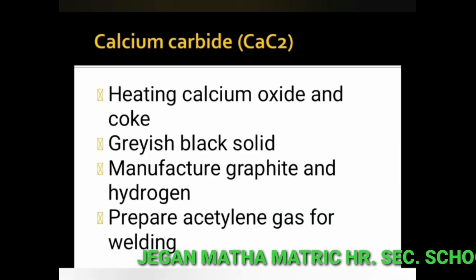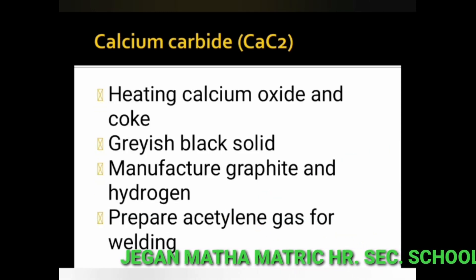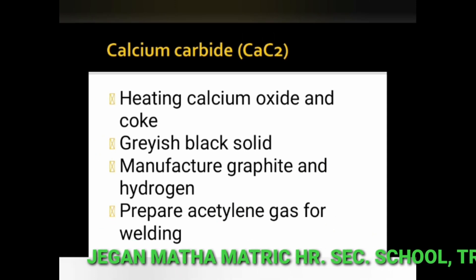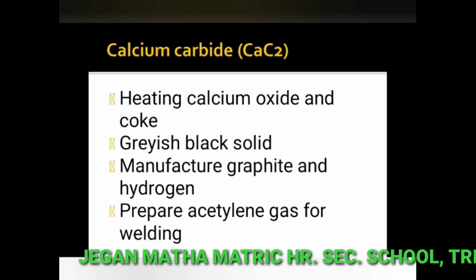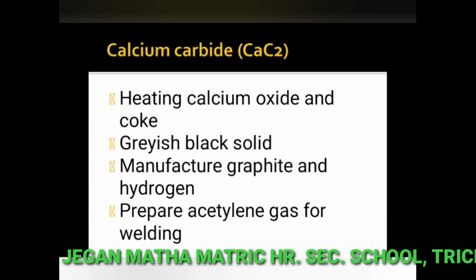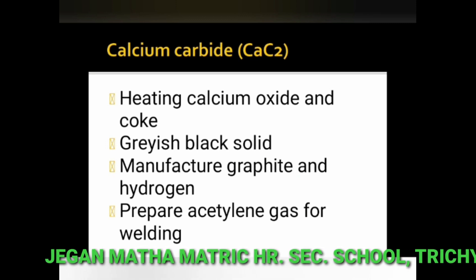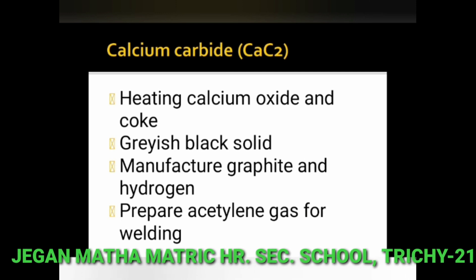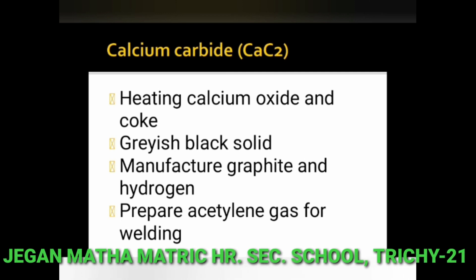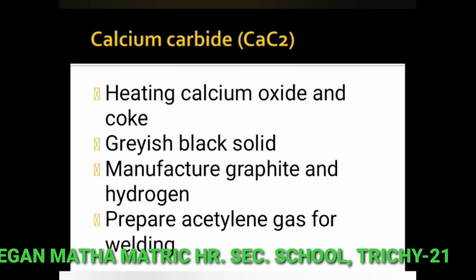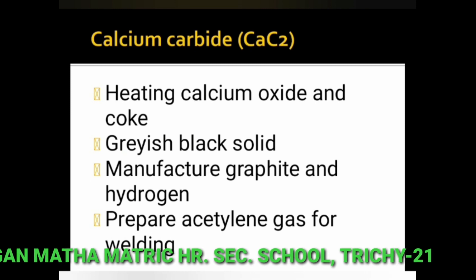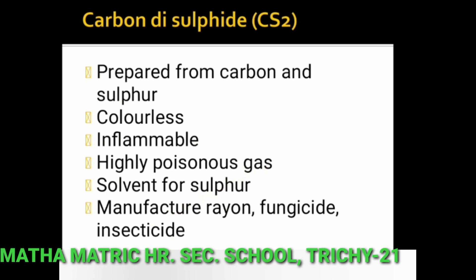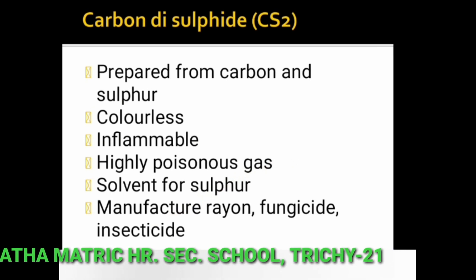Next is calcium carbide. It is prepared by heating calcium oxide and coke. It is a gray-black solid. It is used to manufacture graphite and hydrogen, and it is used to prepare acetylene gas for welding.